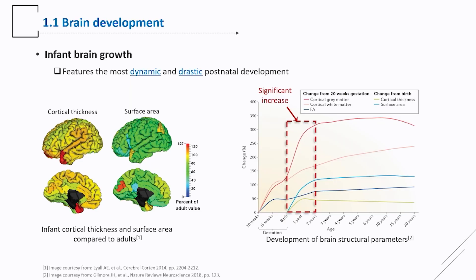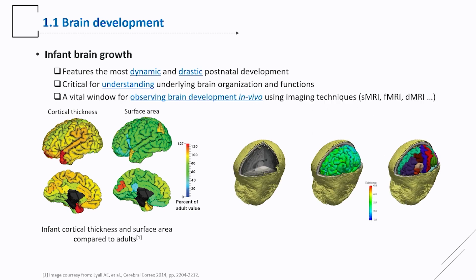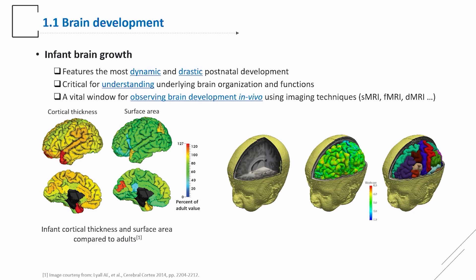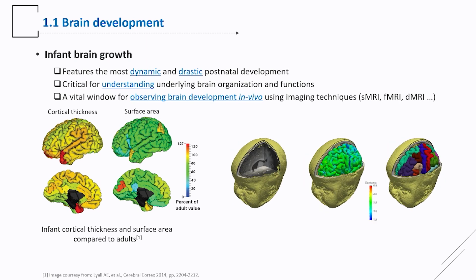First I will introduce some background on infant cortical parcellation. The infant baby brain is growing very fast, and this growth differs in two aspects: the velocity is drastic, and the developmental pattern is dynamic in a temporal way. This period is critical for understanding underlying brain organization and functions, and provides a vital window for observing brain development in vivo using imaging techniques such as structural MRI and diffusion MRI.